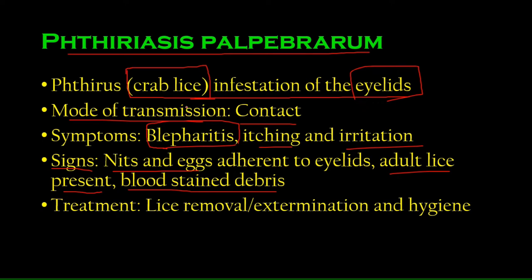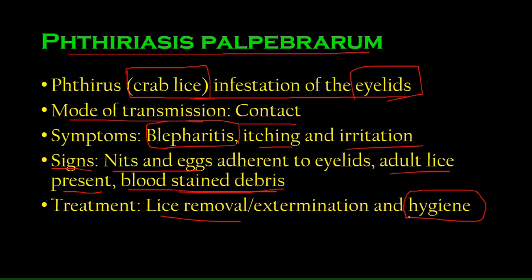Treatment is the removal of lice through different drugs. Since they're insects, we use insecticides like malathion. Other drugs include pilocarpine and physostigmine. Yellow mercuric oxide may also be used because mercury is a toxic heavy metal that disrupts metabolic processes in the lice, killing them. After treatment, maintaining hygiene, abstaining from sexual activity, and not sharing towels are also important.